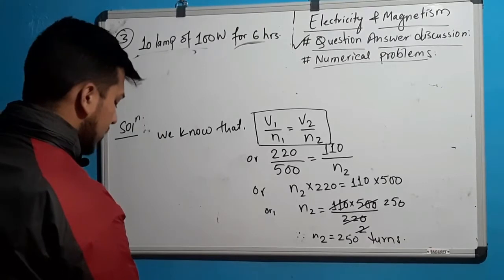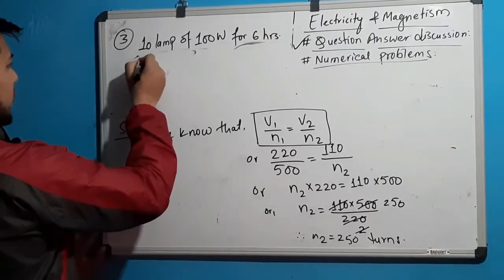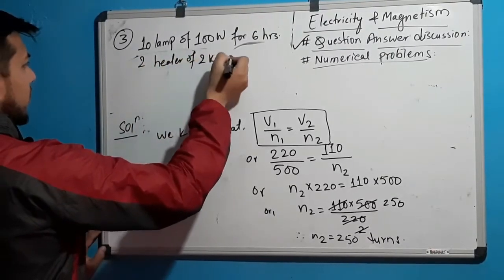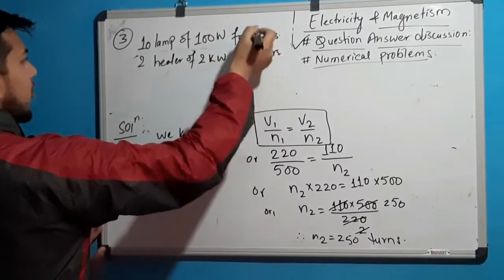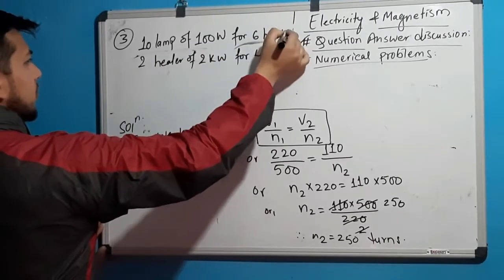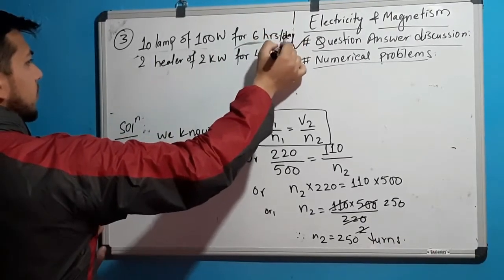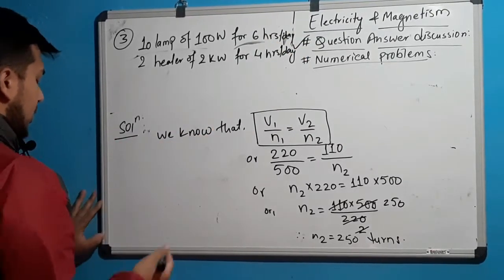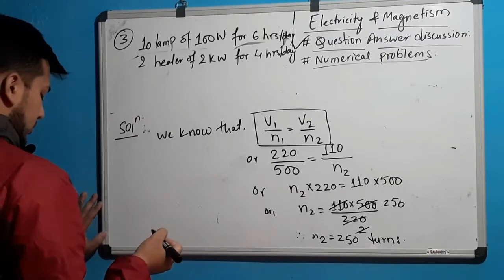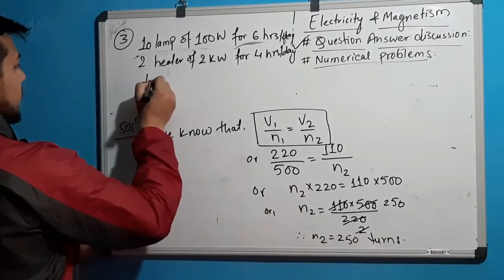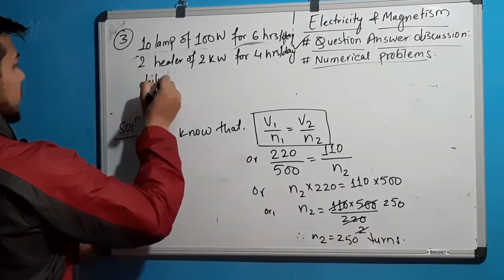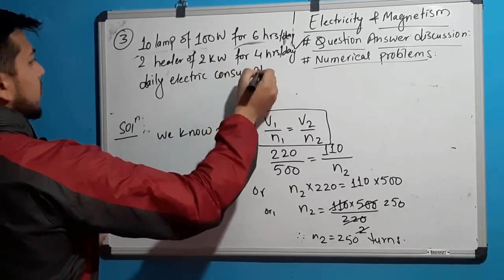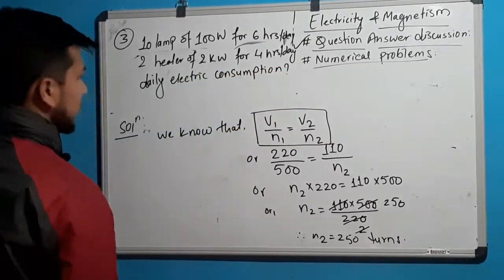Also, 2 heaters of 2 kilowatt per hour are used per day. What is the daily electric consumption?